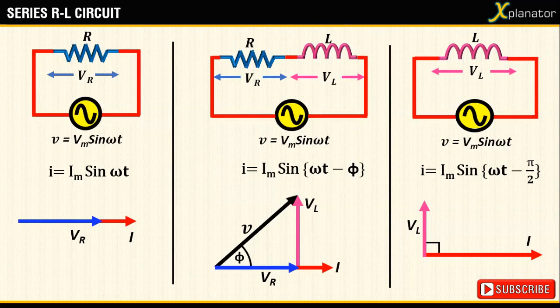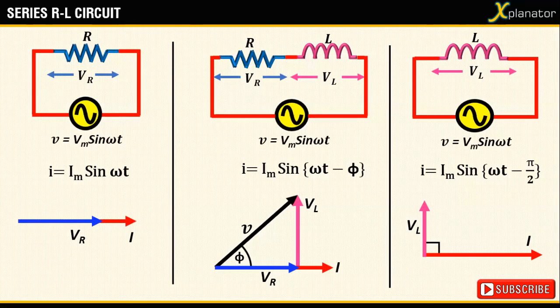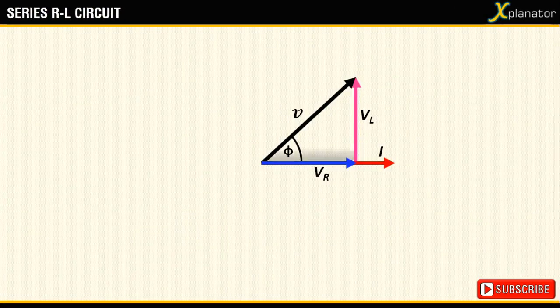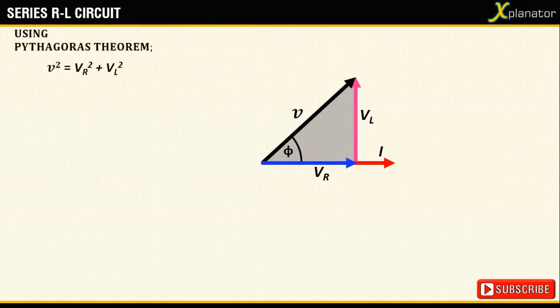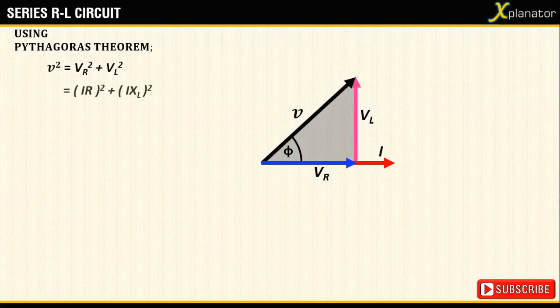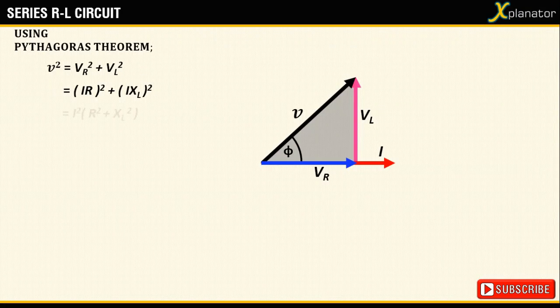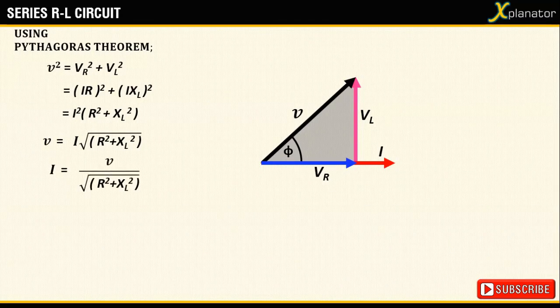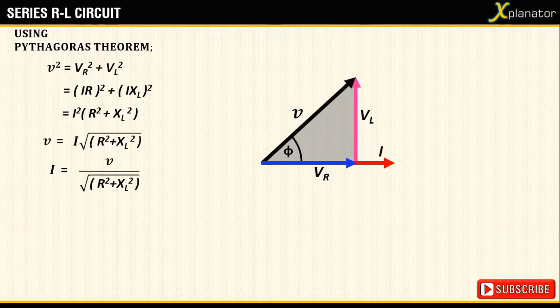To find the magnitude of this current, consider the right-handed triangle and the relation V squared equals Vr squared plus Vl squared. Substitute V as IR from Ohm's law and simplify to get the equation for current I. The current can be written as V divided by root of (R squared plus xl squared).